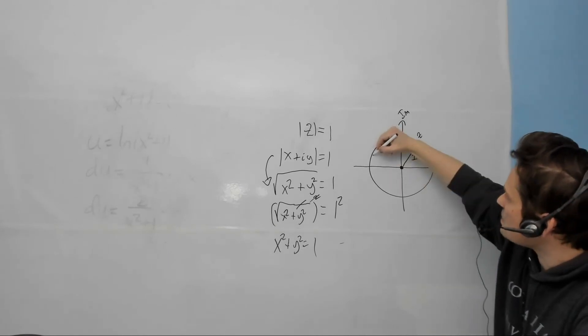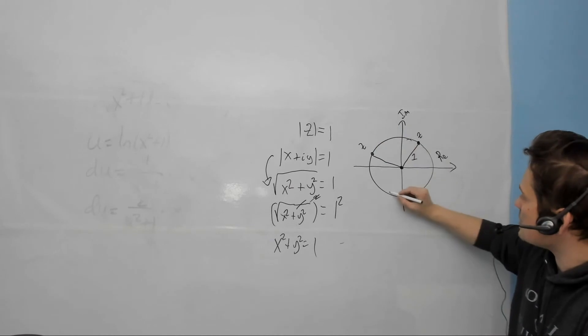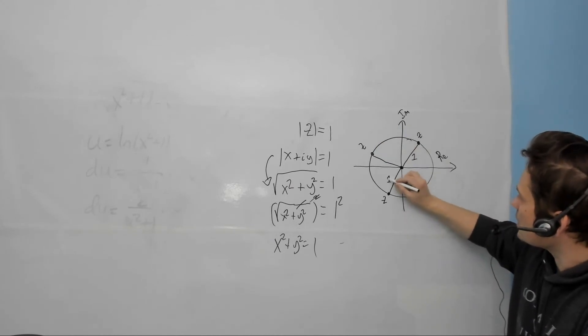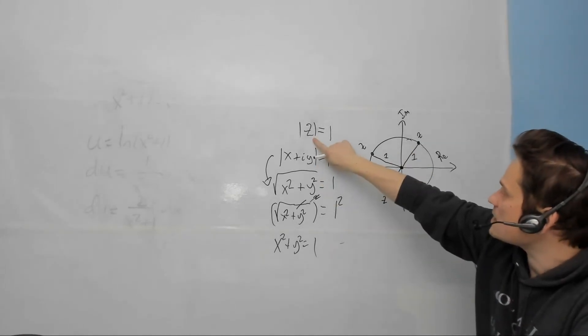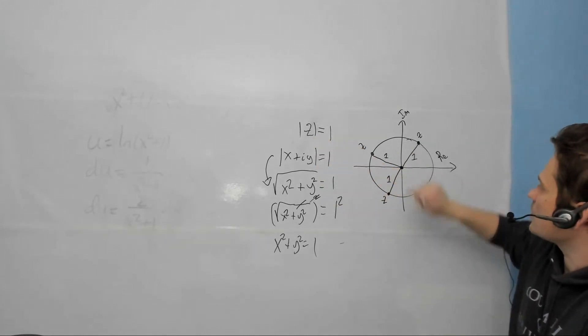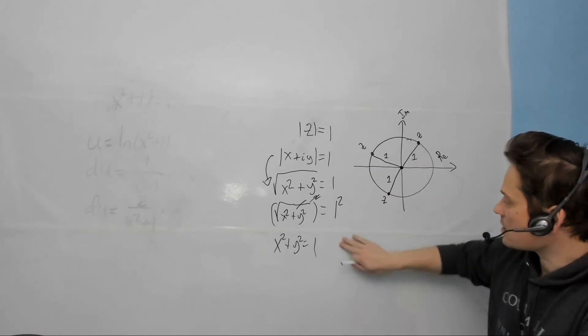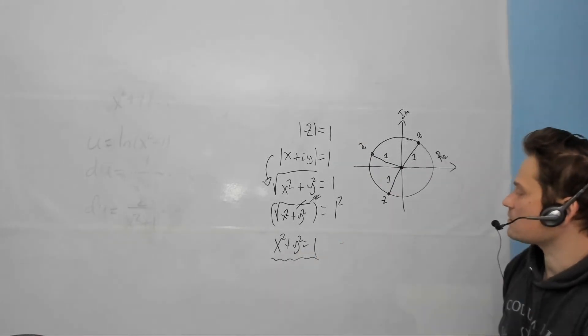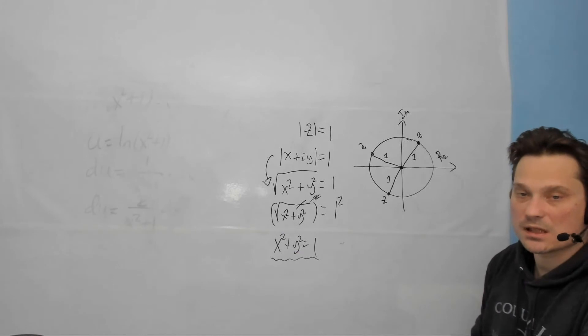Or maybe z is this point, and it's still 1 unit. So maybe z is this point here, and then this is still 1 unit. So this says find every z that is 1 unit from the origin, essentially. That's what it's saying. And it's confirmed by converting to Cartesian coordinates, where it says x squared plus y squared equals 1.